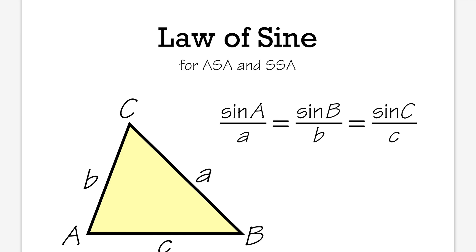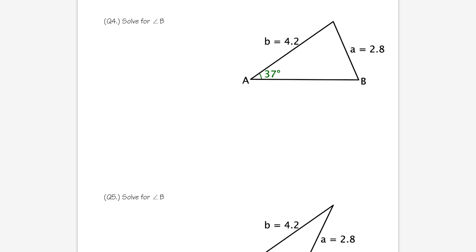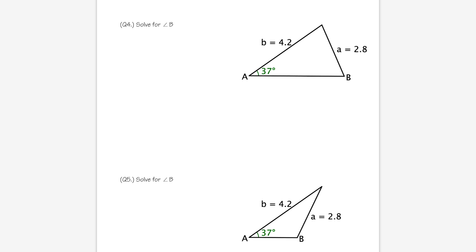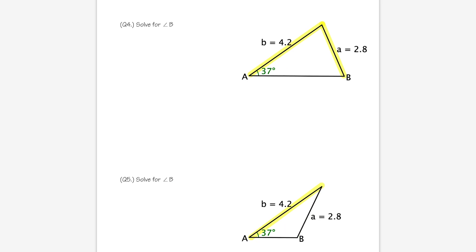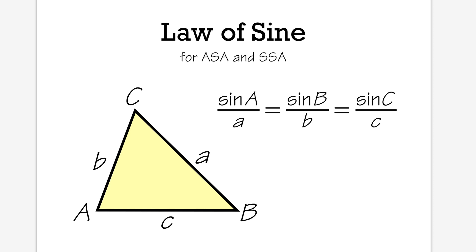Today we will be going over the Law of Sines, which is useful if you're taking trig or pre-calc. We'll go over five examples including a word problem. You can download this file in the description and try the questions along the way. Number four is tricky — it involves the ambiguous case, which we'll cover at the end.